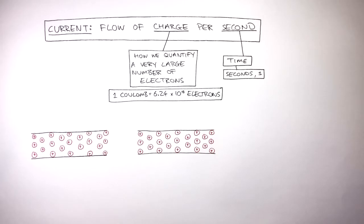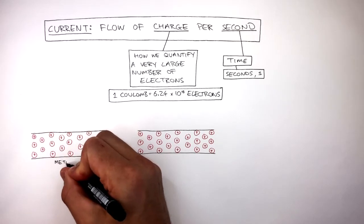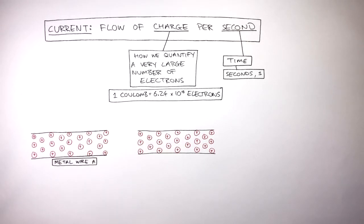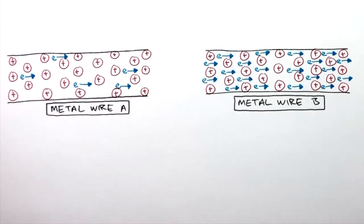Here are two close-ups of metal wires. On the left is metal wire A and on the right is metal wire B. The red circles with crosses represent the positive metal ions. In both metal wires we can see how the E represents electrons. There are more electrons flowing in metal wire B compared to metal wire A. So the flow of charge is bigger in metal wire B and the flow of charge is smaller in metal wire A.